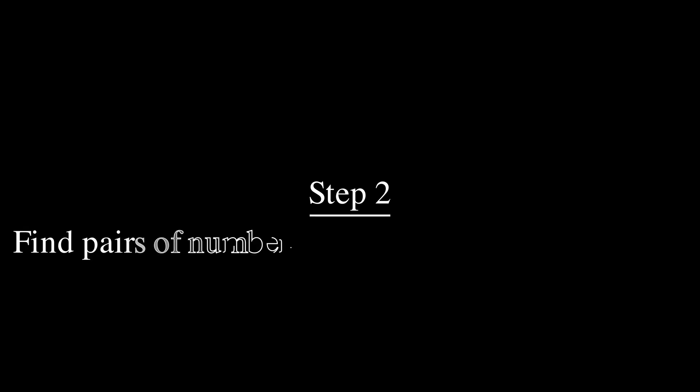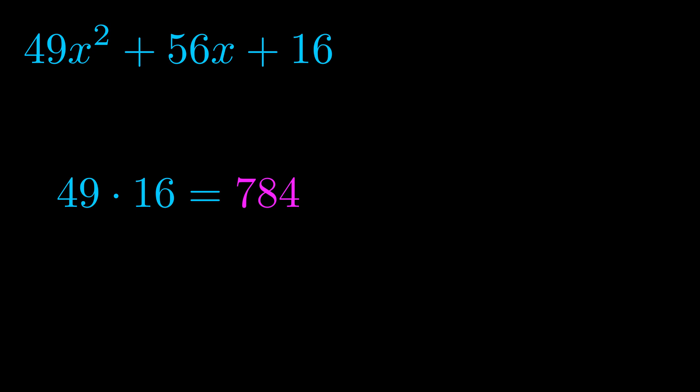Step two is to try to find all of the pairs which multiply to this number. Now it turns out you don't really need to find all of them, but go ahead and write down as many numbers as you can that multiply to the magenta value for now. Pause the video and resume when you're ready to continue.